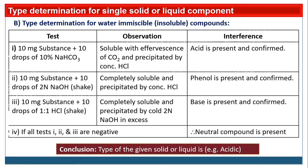At the end, write the conclusion: 'Type of the given solid or liquid is...' — for example, acidic, phenolic, basic, or neutral. Write the conclusion in one sentence and put brackets around it for clarity. For example: 'Type of the given solid or liquid is acidic.'